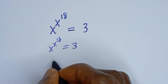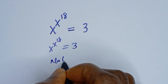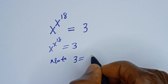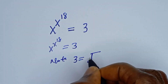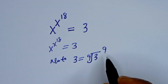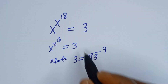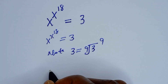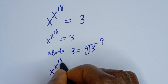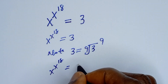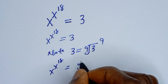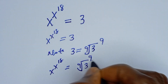Note that 3 is equal to the 9th root of 3 to the power of 9. So let's replace 3 by this. We have x to the power of x to the power of 18 is equal to the 9th root of 3 to the power of 9.